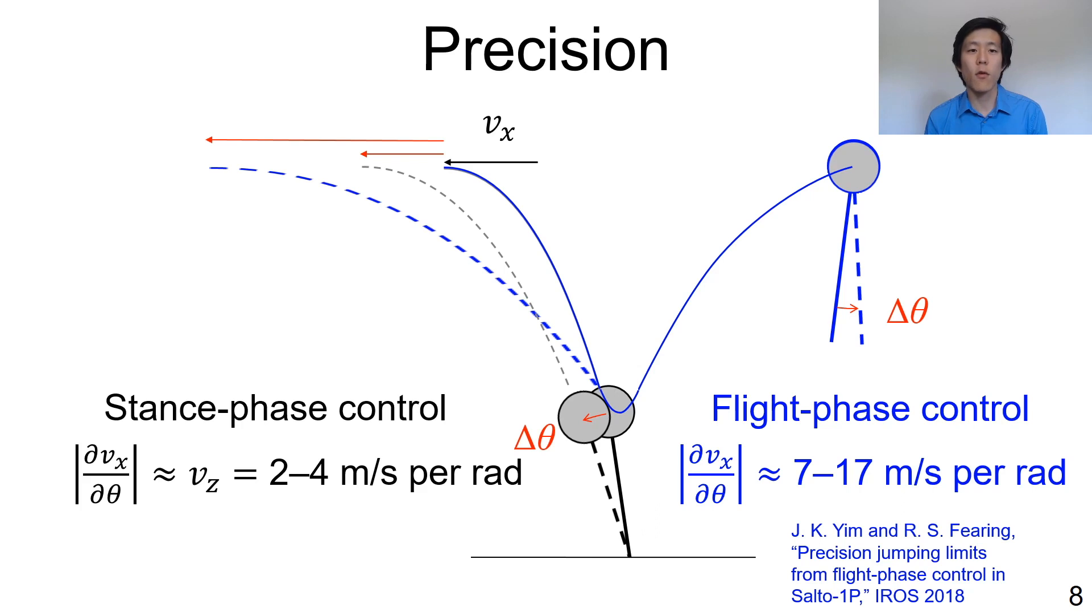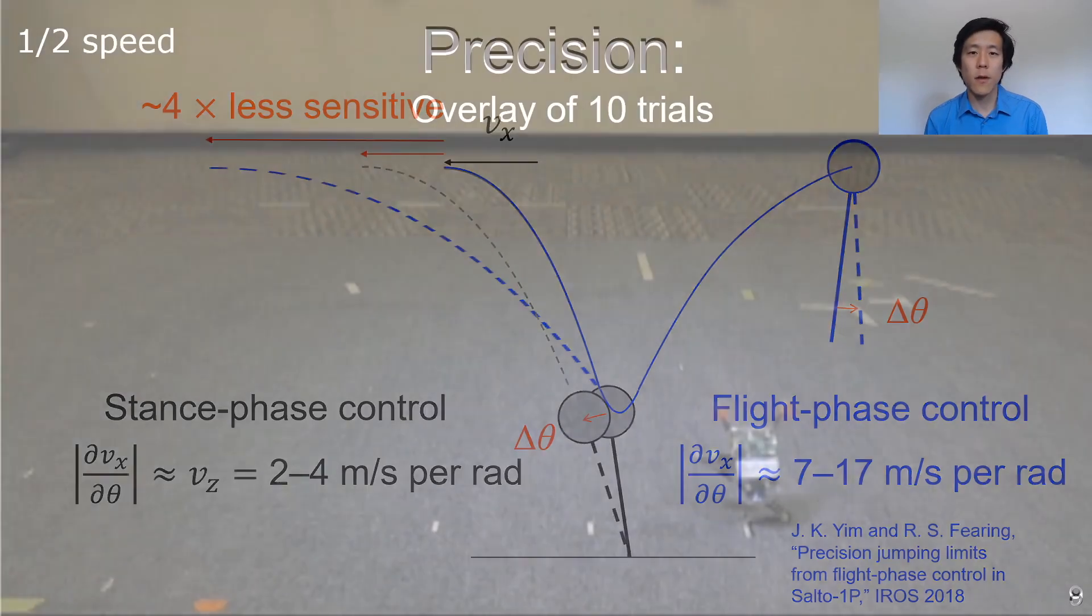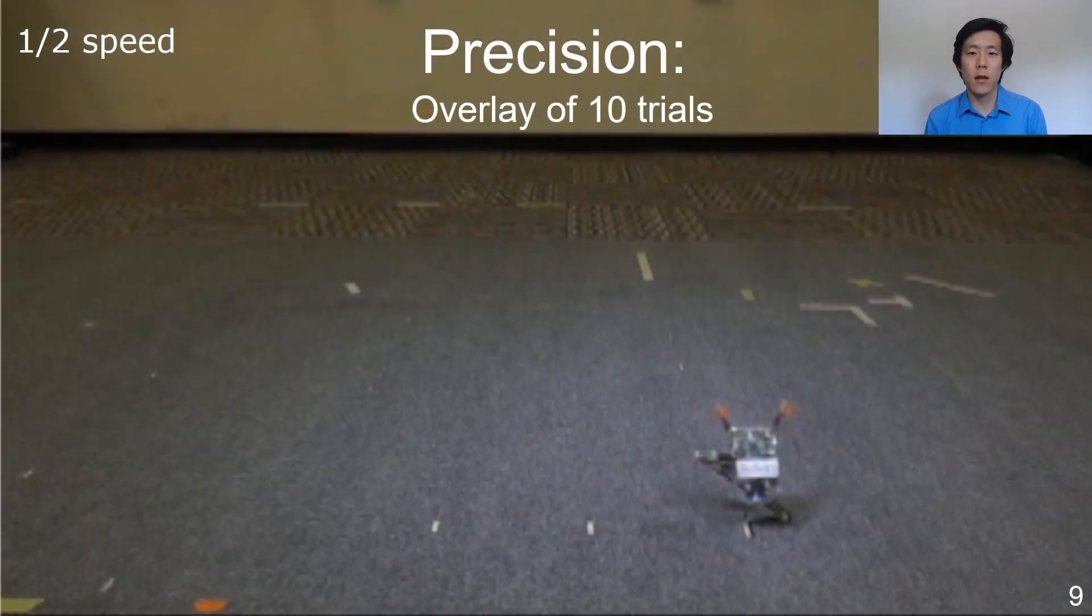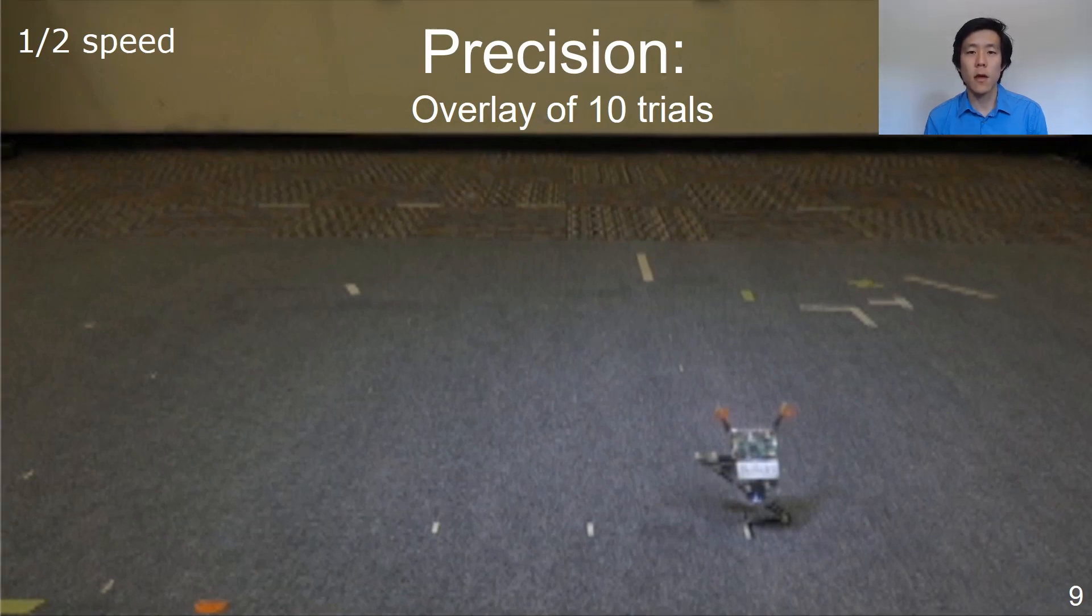This is an approximately 4-fold decrease in sensitivity compared to the earlier flight phase control, and so, for similar angle errors, we should expect the stance phase to be significantly more precise in directing launches than the flight phase. To test this experimentally, we ran a series of 10 trials in which the robot was commanded to jump on the same trajectory. This video shows an overlay of all 10 trials, played back at half speed.